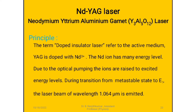Principle: The ND-YAG laser is a doped insulator laser. The Yttrium Aluminium Garnet active medium is doped with Nd³⁺ ions. The Neodymium ion has many energy levels. Due to optical pumping, the ions are raised to excited energy levels. During the transition from the metastable state to E1, a laser beam of wavelength 1.064 micrometers is emitted.